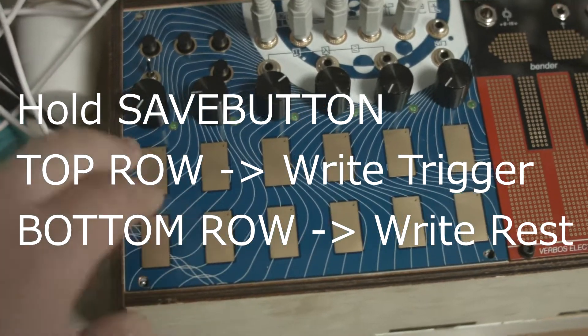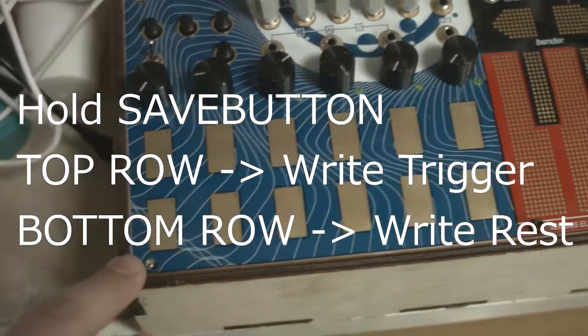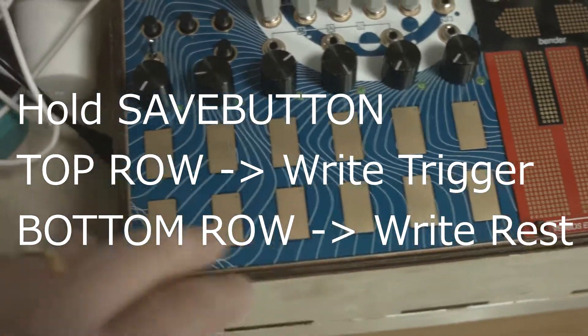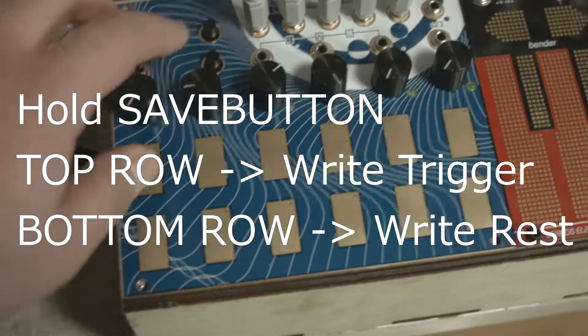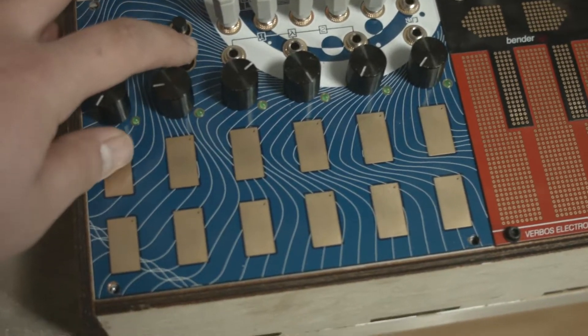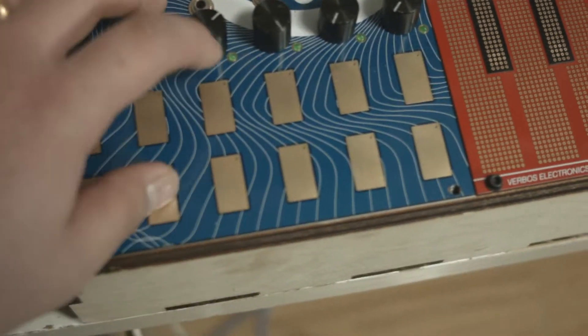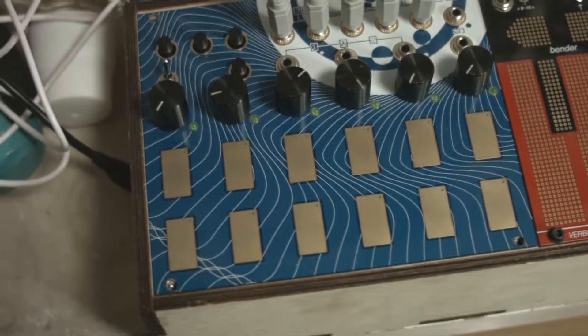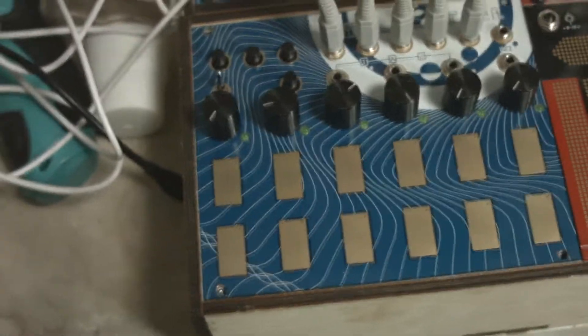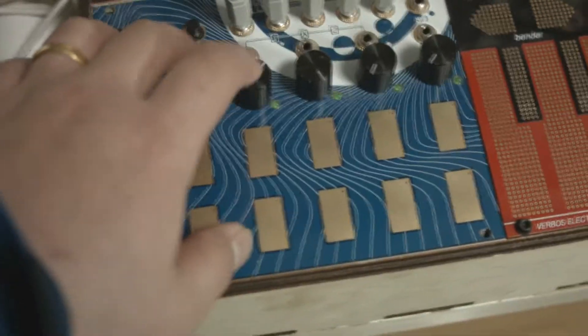The second row writes rests. So you hold the save button and you can input multiple triggers in the same step by holding them together.